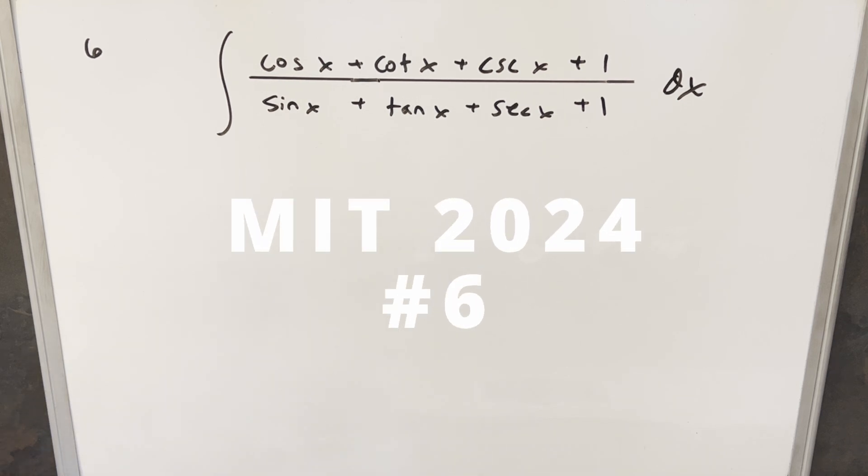Okay, we have here another integral. This one's from the MIT Integration Bee from 2024. This was problem six. We have the integral of cosine x plus cotangent x plus cosecant x plus one over sine x plus tan x plus secant x plus one dx.